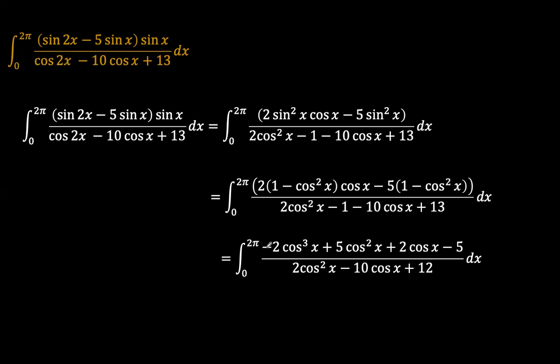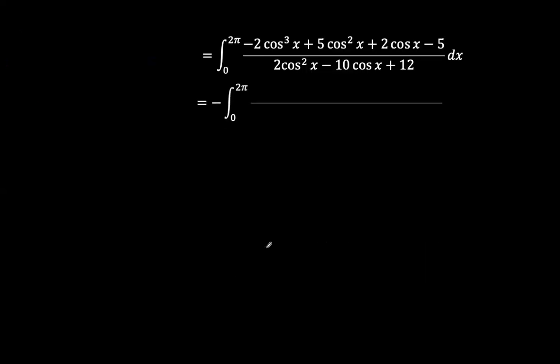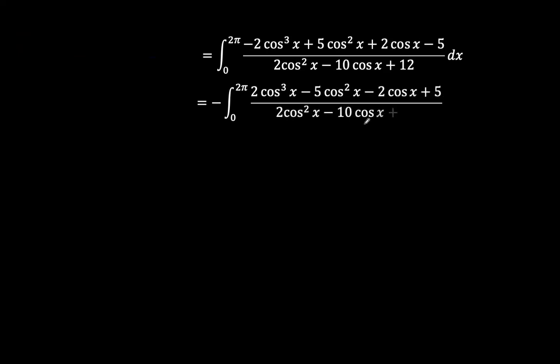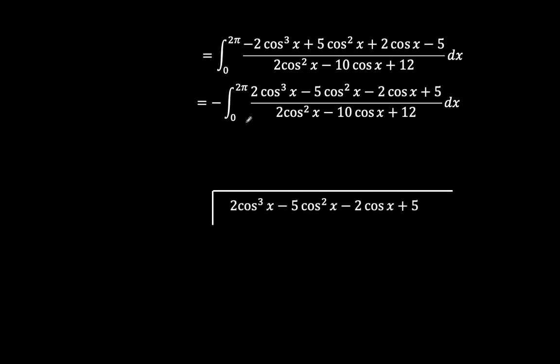We pull out a negative sign, giving the integrand: [2cos³(x) − 5cos²(x) − 2cos(x) + 5] over [2cos²(x) − 10cos(x) + 12], with a negative sign outside the integral. This is an improper fraction because the degree of the numerator exceeds that of the denominator, so we apply polynomial long division. We divide 2cos³(x) − 5cos²(x) − 2cos(x) + 5 by 2cos²(x) − 10cos(x) + 12.